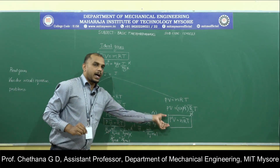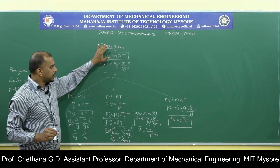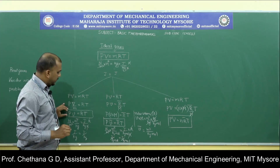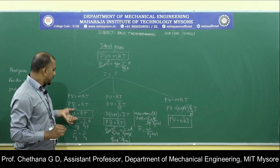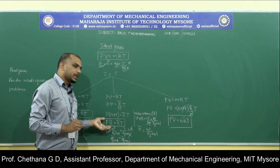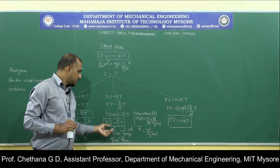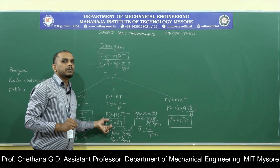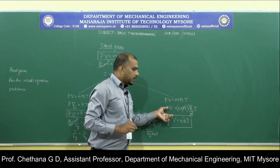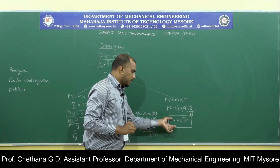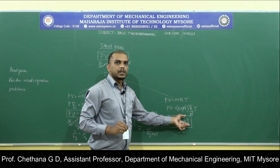These are the forms of ideal gas equation: PV = MRT is one form; dividing by mass gives small v = RT where small v is specific volume; P·V-bar = R-bar·T where V-bar is molar volume equal to specific volume times molecular weight and R-bar is the universal gas constant; and PV = N·R-bar·T where N is number of kg-moles and R-bar is universal gas constant.